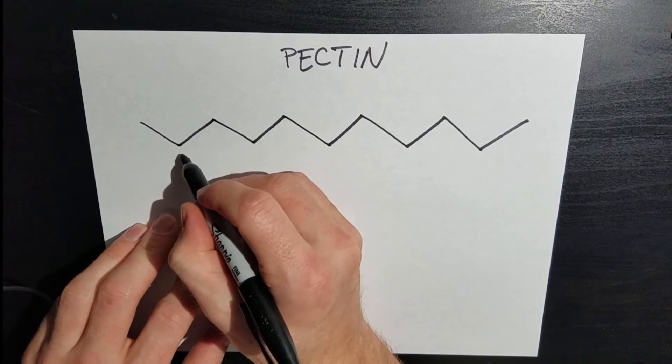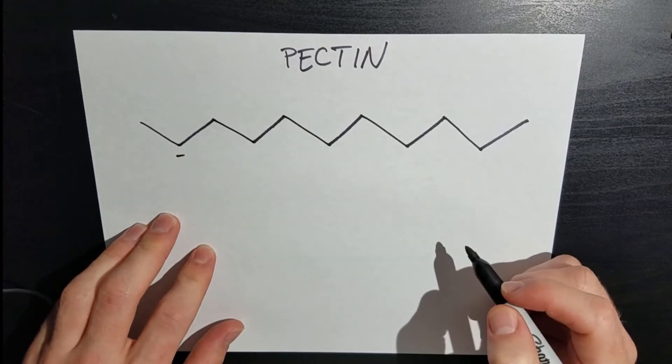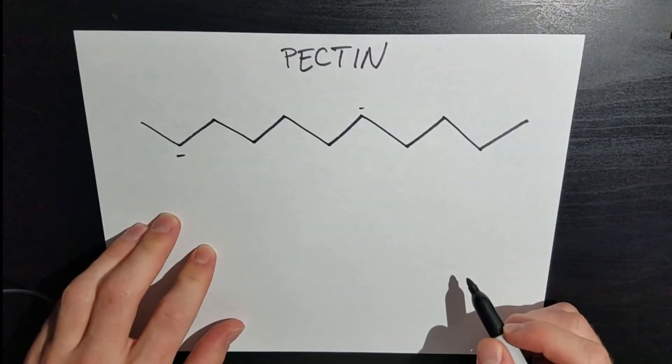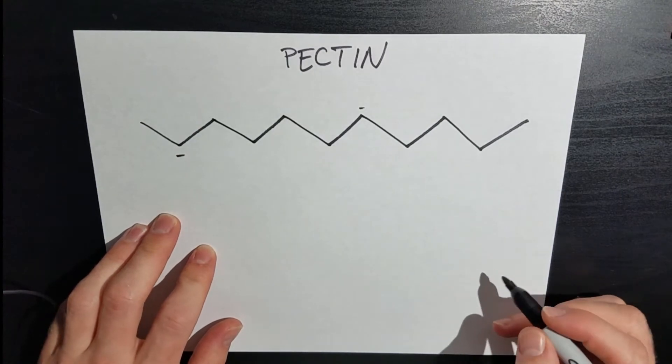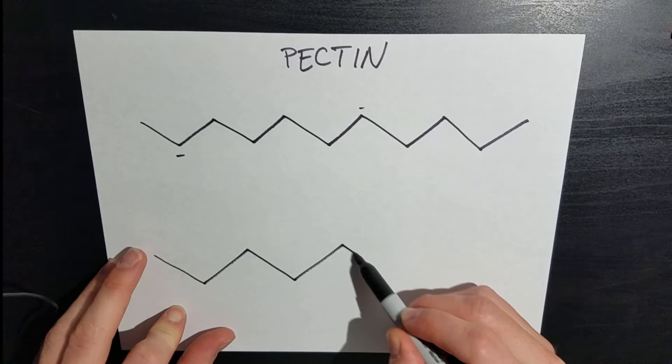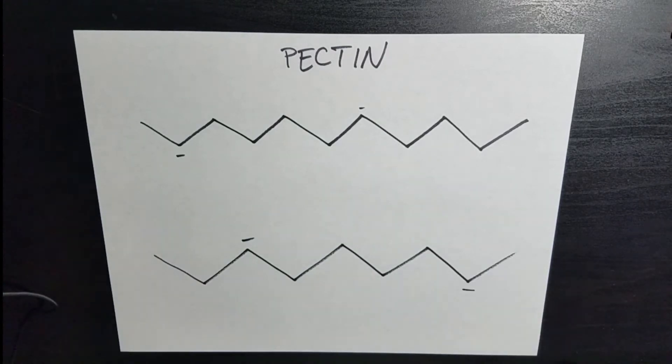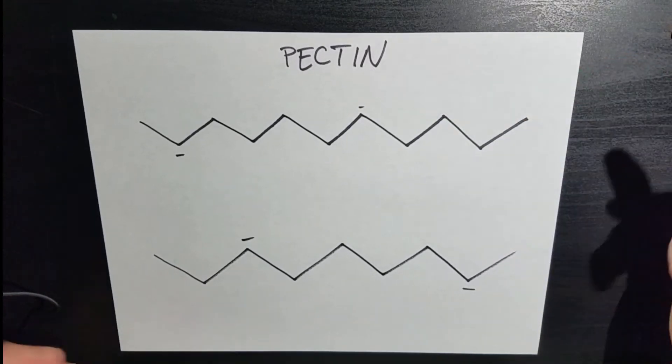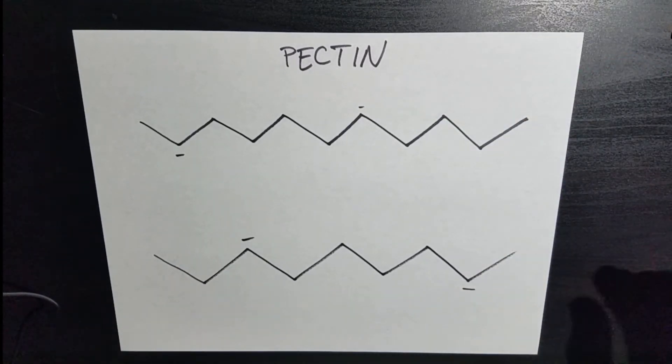And every once in a while on pectin you'll have a negative charge. It's not everywhere, but it's here and there. And I'm going to just draw another molecule of pectin. This is part of the cell wall structure that you're going to have in those black beans and also the cucumbers that the pickles are made out of. And also this pectin molecule is used for jams and jellies.